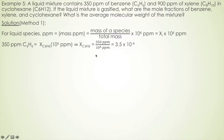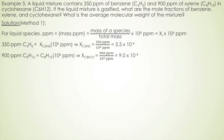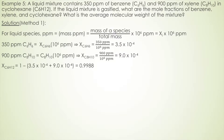We can perform the same calculation for xylene. Given that xylene is 900 ppm, the mass fraction of xylene is 900 divided by 10^6, giving 9.0 × 10⁻⁴. The mass fraction of cyclohexane is then 1 minus the sum of the benzene and xylene mass fractions, giving 0.9988. This value is much larger because cyclohexane is the dominant solvent.